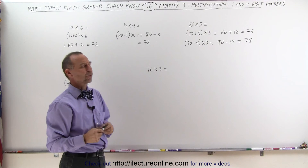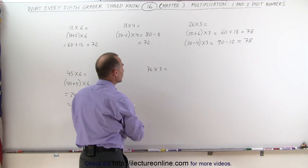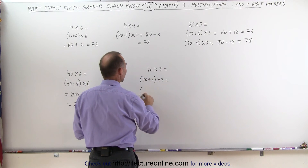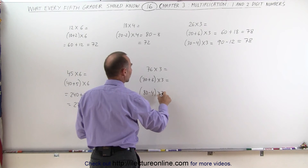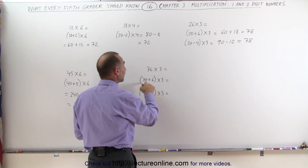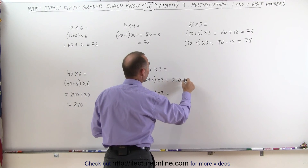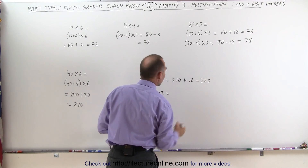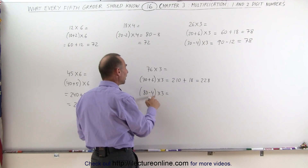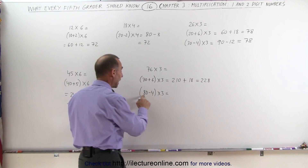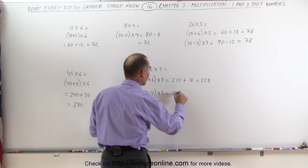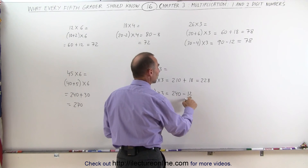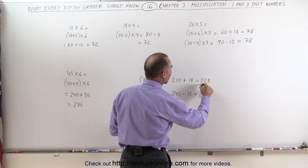And finally, when I look at 76 times 3, you can do it like 26 times 3 — you can think of it as either 70 plus 6 times 3, or 80 minus 4 times 3. For 70 times 3: 7 times 3 is 21, add a 0, that gives you 210. Plus 6 times 3 is 18. 210 plus 18 is equal to 228. If you write it as 80 minus 4 times 3: 80 times 3 — 8 times 3 is 24, add a 0, that's 240, minus 4 times 3 which is 12. So 240 minus 10 is 230, and 230 minus 2 is 228. You get the same answer.